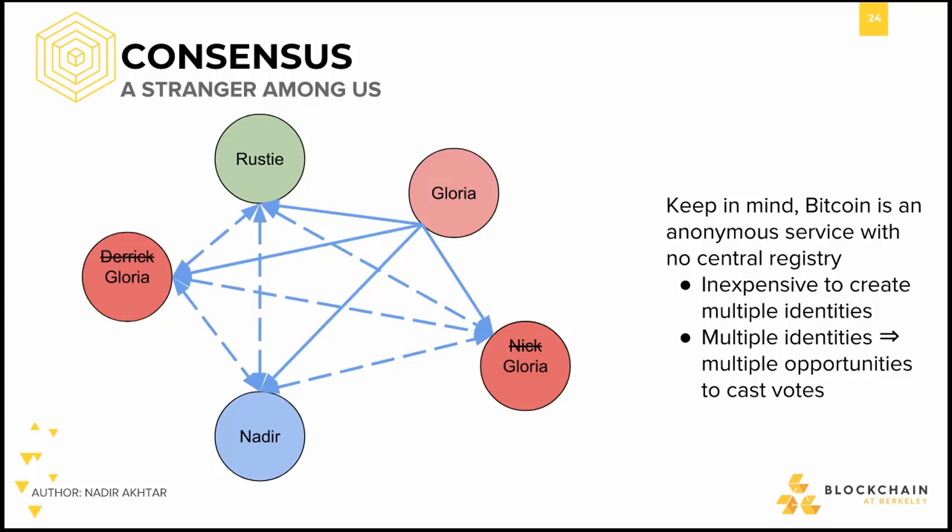Clearly, to solve the problem, we cannot assume that each online identity deserves the same voting power, as some people have multiple identities. To ensure that every real person only has one vote, we have to make a vote expensive. We have to make it such that anyone trying to vote has the same amount of voting power as anyone else, regardless of how many Bitcoin identities they have. But how? Is it even possible to solve this problem?